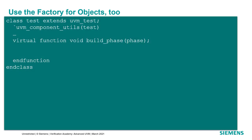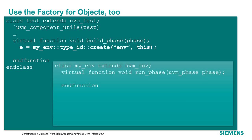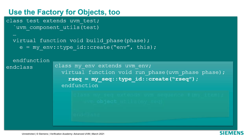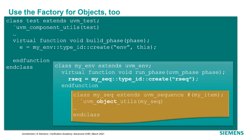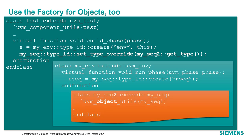We can also use the factory for objects. In the build phase of a test, we instantiate the environment, and in the environment at the run phase, we create an instance of a sequence of type MySeq. We register the sequence with the factory using the UVM object utils macro. From the test, we can override the type of that sequence to a different sequence extended from the same base type, and without changing the environment code, at runtime when it creates an instance of the sequence, it will give us MySeq2 instead of MySeq.